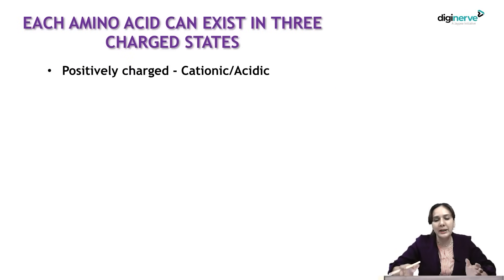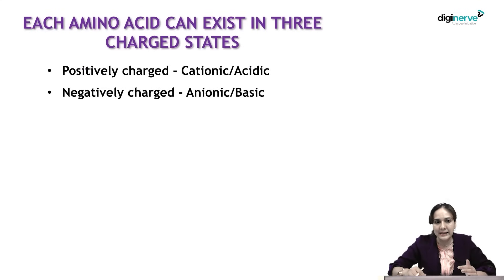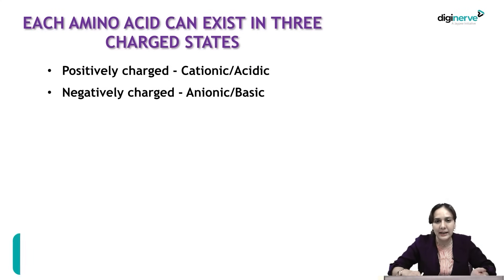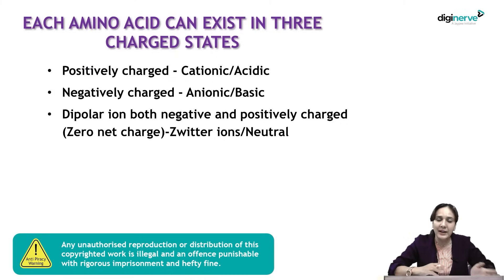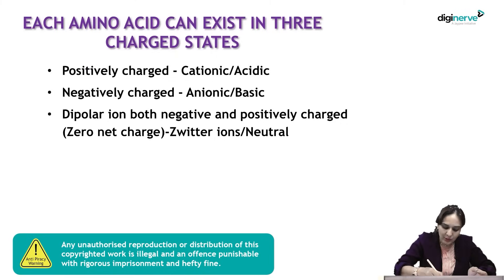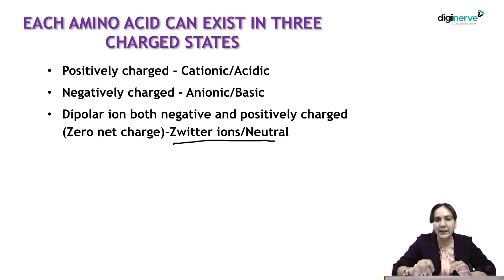Positively charged ions are known as cations and are acidic, while negatively charged ions are anions. An ion which carries both a positive and a negative charge such that the net charge is zero is known as a zwitterion or neutral ion.